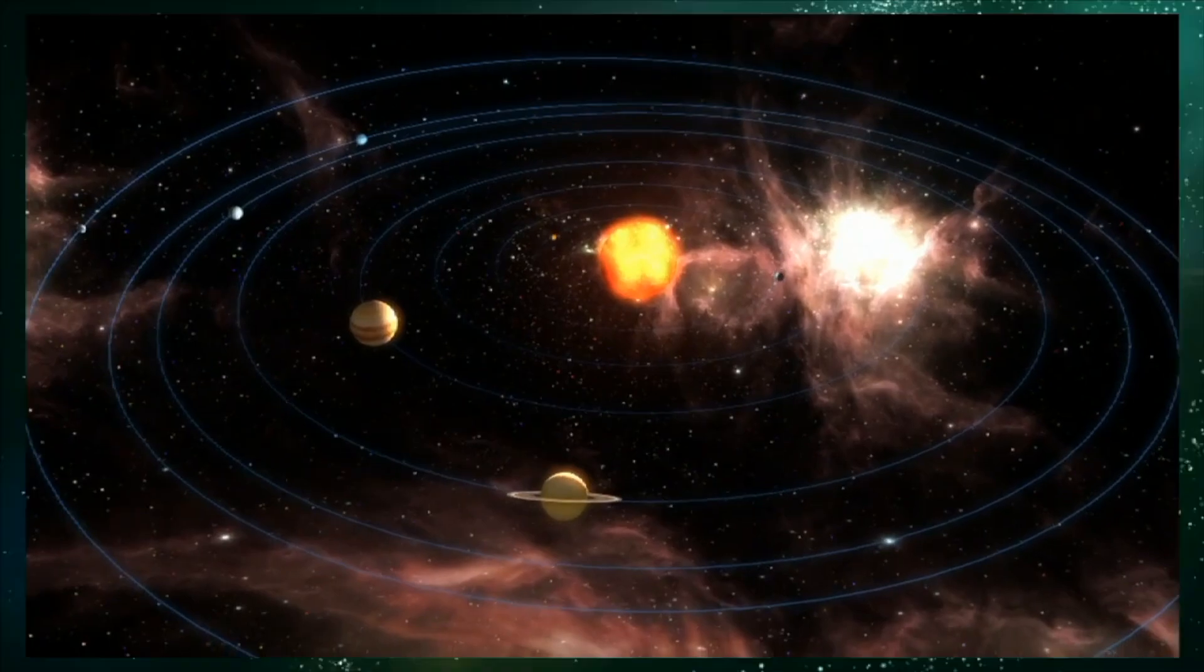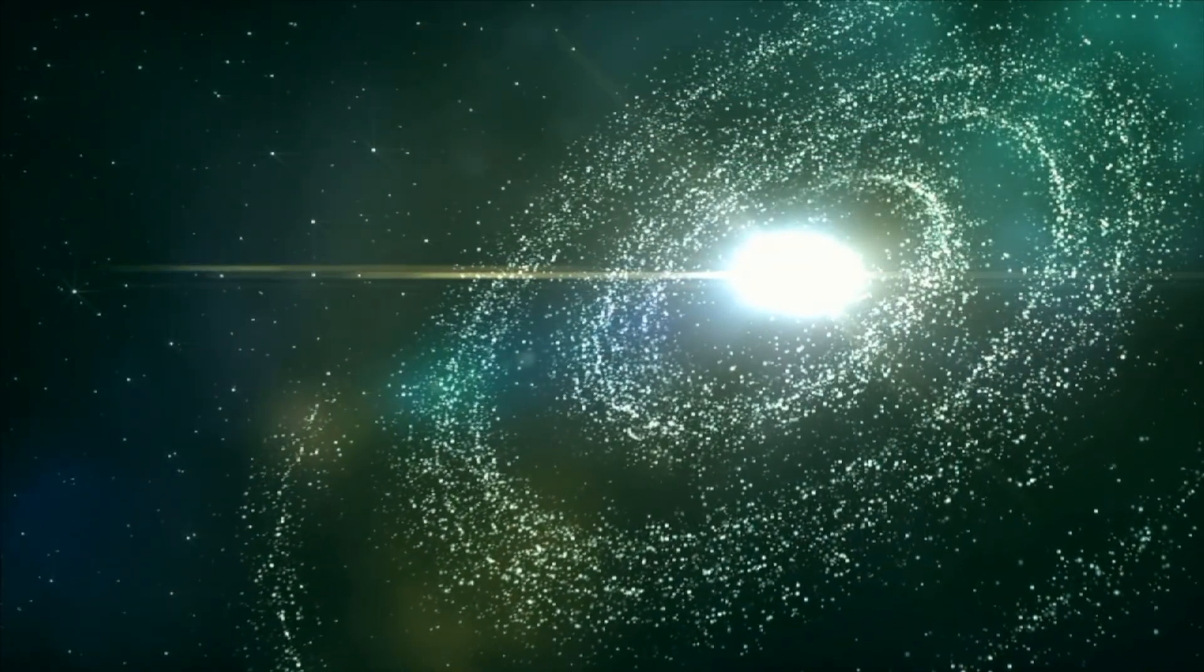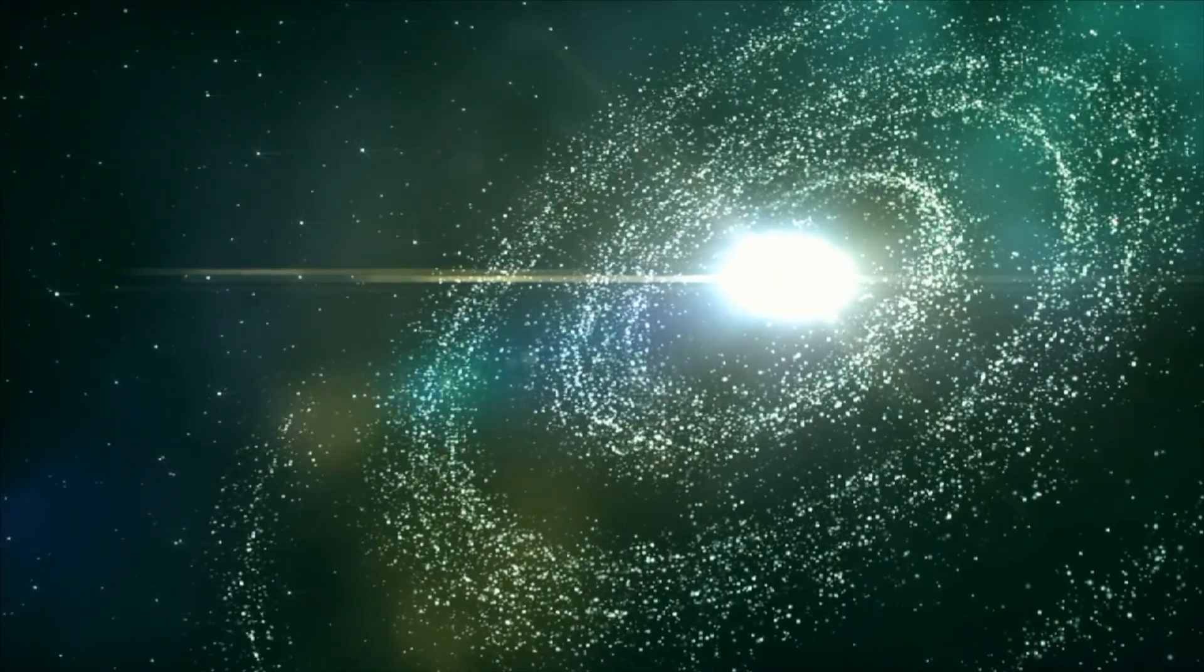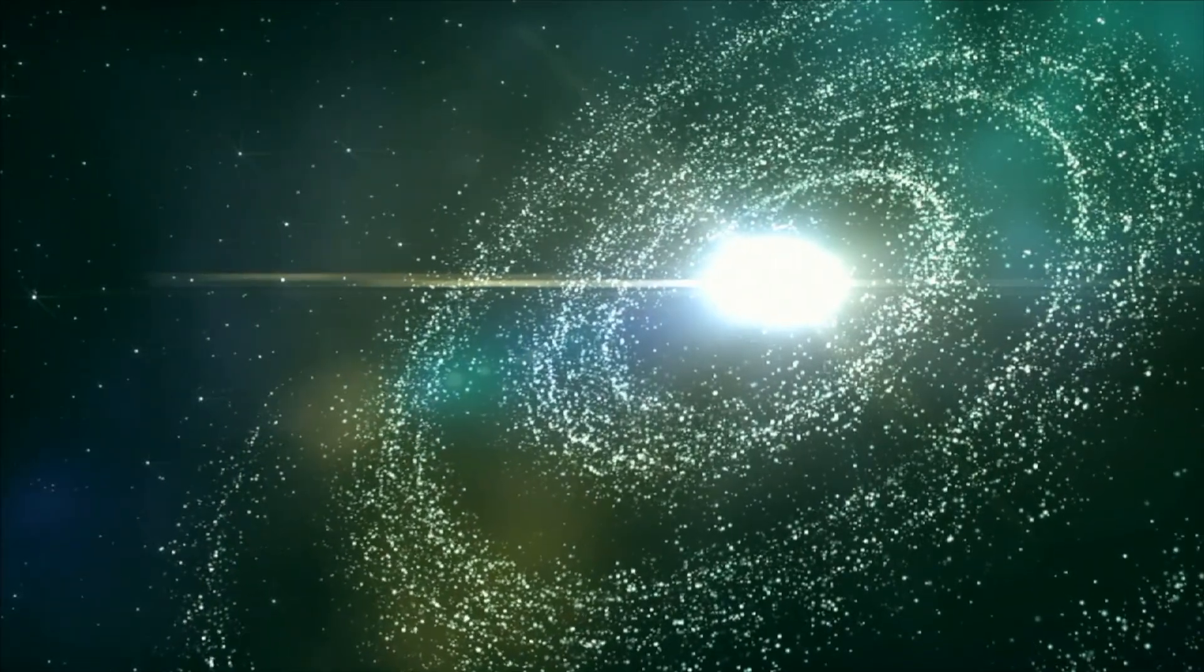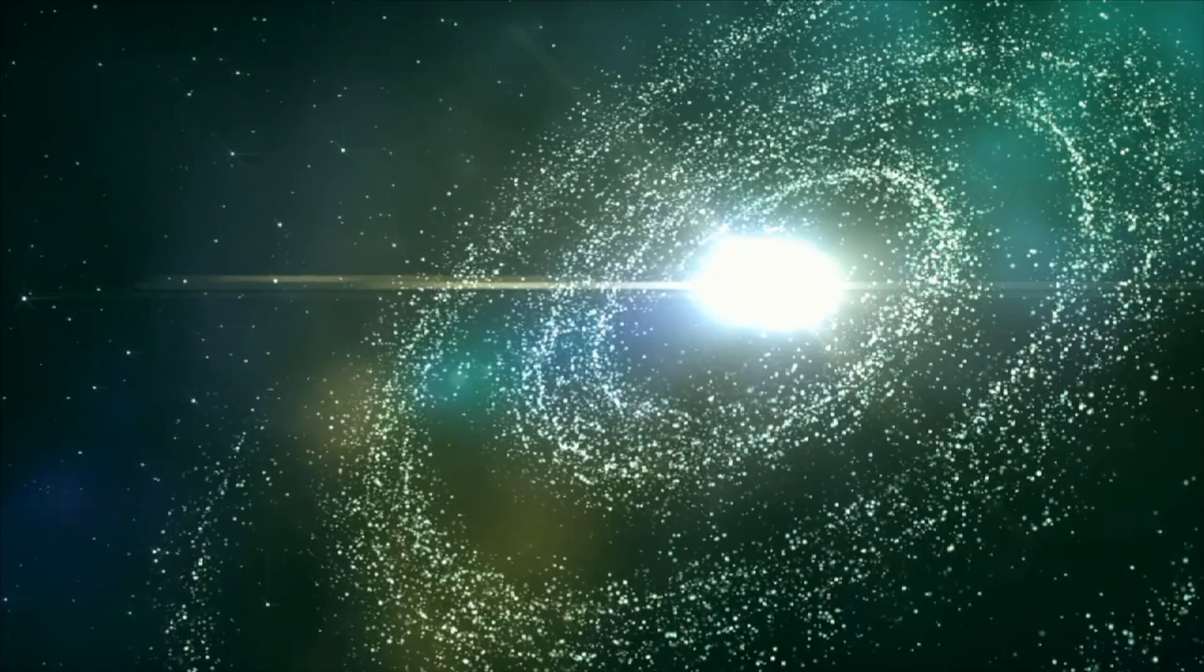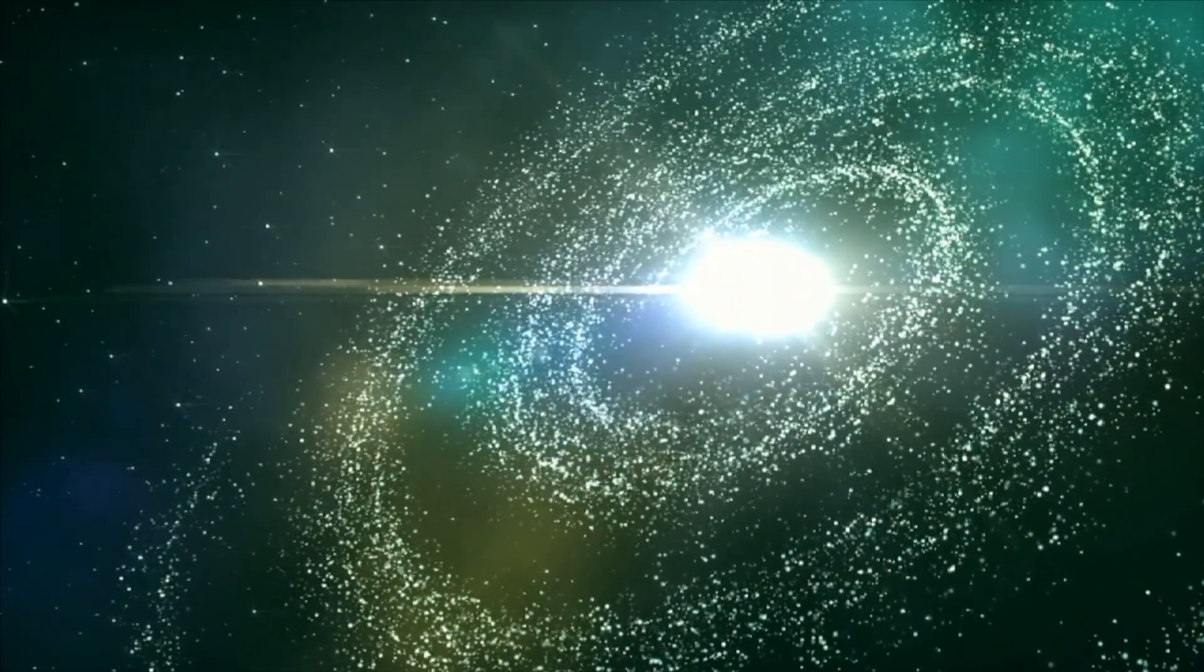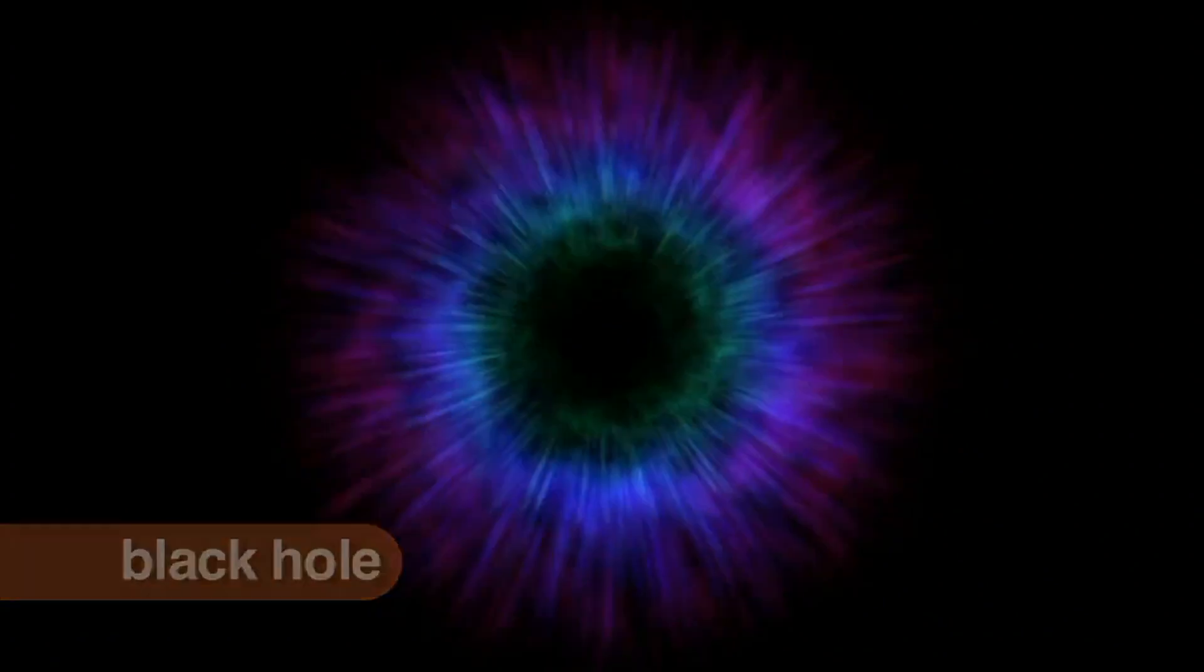In most galaxies, the stars orbit around the center of the galaxy the way planets orbit around a star. Scientists don't know for sure what is at the center of galaxies. Some scientists think there might be giant black holes at the center. A black hole is an area in space where gravity is so strong that even light cannot escape it.